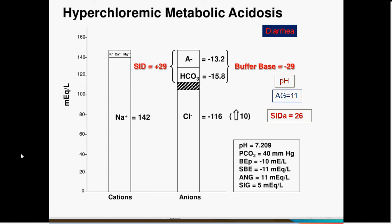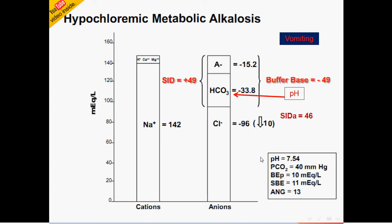With vomiting, chloride is lost from the gastrointestinal tract. By electroneutrality, loss of chloride is associated with an increase in bicarbonate. When you look at the two together — sodium and chloride — they still sum to 130, so the anion gap is normal. The buffer base increases, indicating alkalosis. The strong ion difference — the difference between sodium and chloride — is higher, also indicating alkalosis. So the increased bicarbonate is manifested both in the increased buffer base and in the increased strong ion difference.